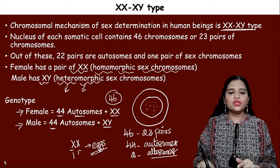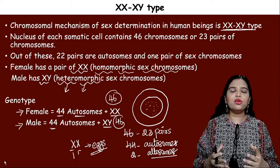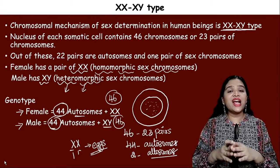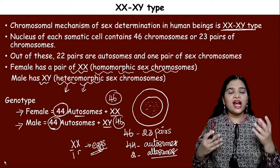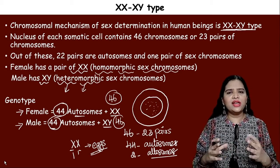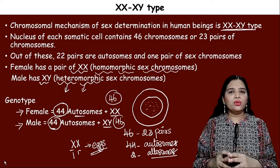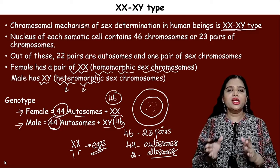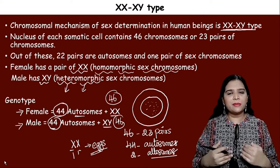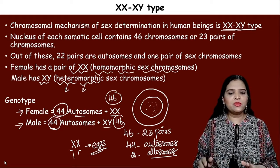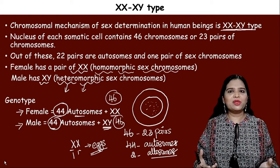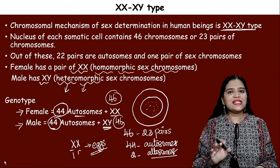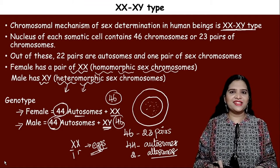The 44 autosomes are the same in both male and female — that is why features like eyes, heart, lungs, and liver are the same in both sexes. The differentiation occurs only in sexual characters. If the chromosomes are XX, female body characters like breast development and ovaries will develop; if XY, masculine characters like testes will develop.